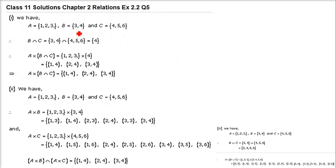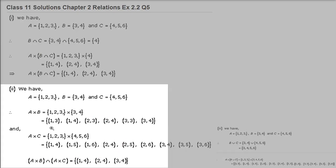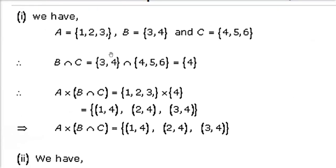If A is {1,2,3}, B is {3,4}, C is {4,5,6}, then we have to find A cross (B intersection C) and others. Taking the first one: B intersection C — what is common? Only 4. So B intersection C = {4}. Then A cross (B intersection C) = {1,2,3} cross {4} = {(1,4),(2,4),(3,4)}. This is A cross (B intersection C).